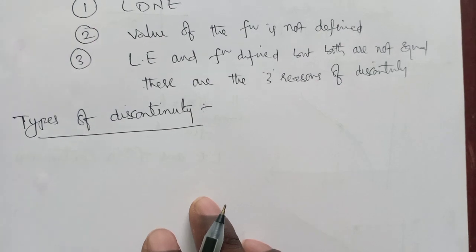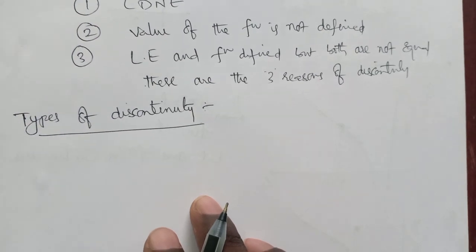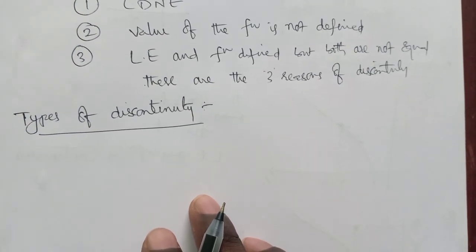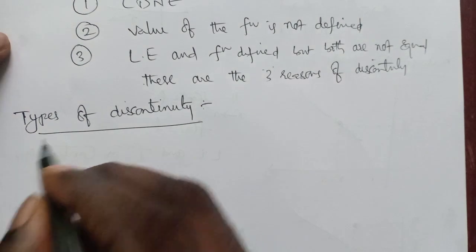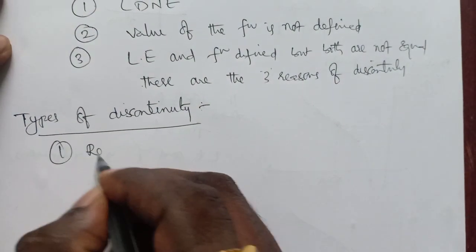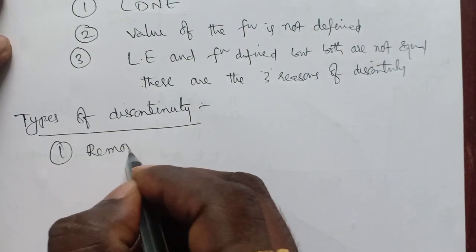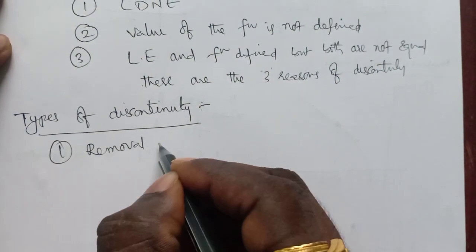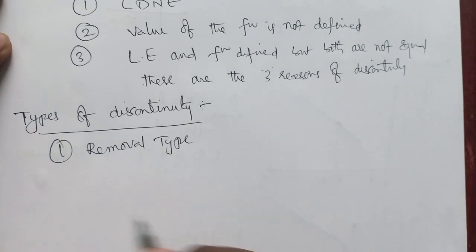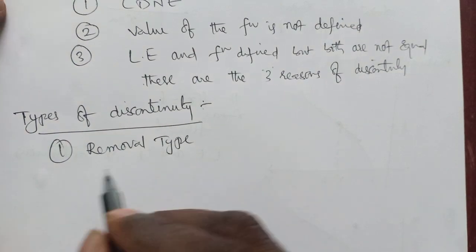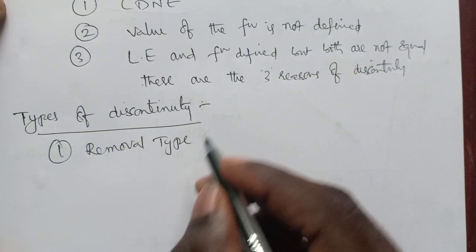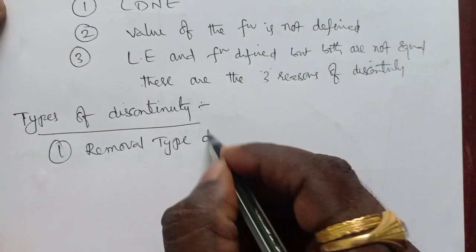Now, what are the types of discontinuity? This is very important. We have two types of discontinuity: the first one is removable type of discontinuity, and the second one is non-removable type of discontinuity.